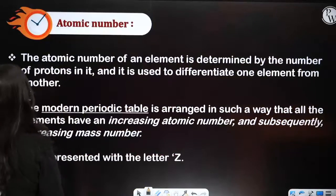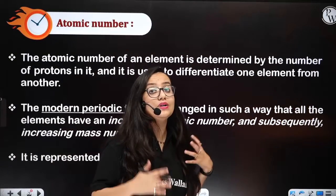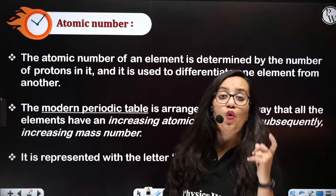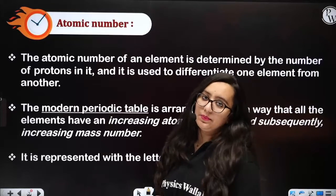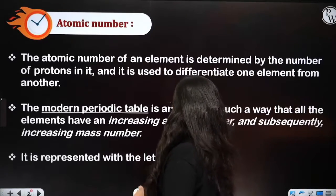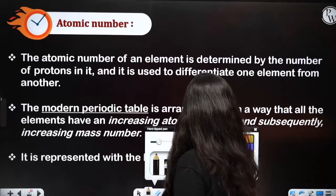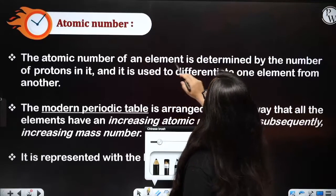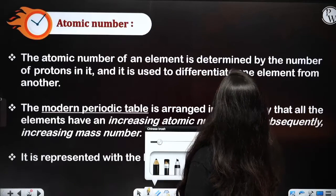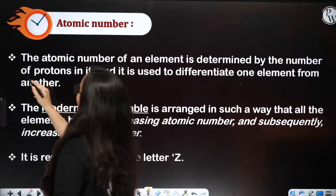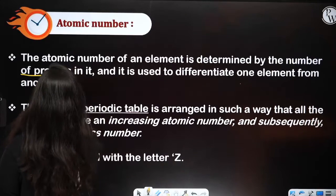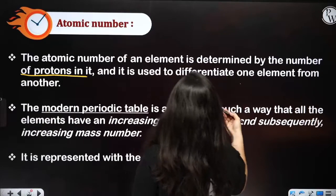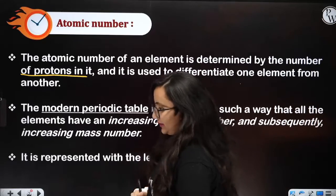First of all, we will talk about atomic number. What is atomic number? Generally, atomic number is determined by the number of protons in an atom, and it is used to differentiate one element from another.